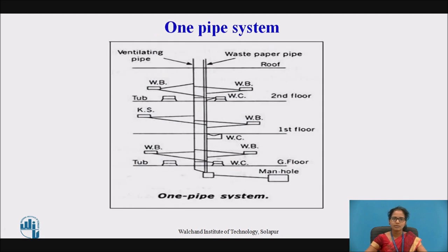Next we have the one pipe system. This system consists of a single main vertical pipe — called the waste pipe — which collects both soil waste and waste water. To the side, a ventilating pipe is provided which acts as a direct outlet into the atmosphere to release foul smell. All the traps of the WCs, wash basins, and kitchen sinks are connected to this vertical pipe.